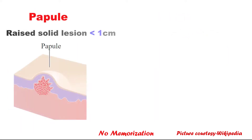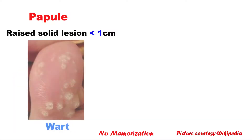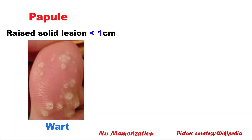Next one is papule. It is a raised solid skin lesion of less than 1 cm. For example, a wart. Here you can see a picture of warts on the big toe.